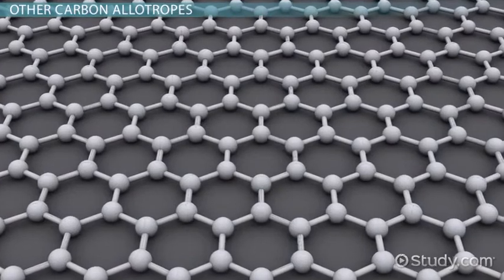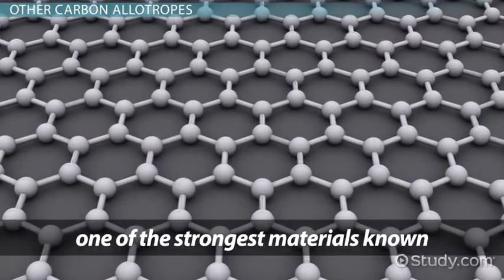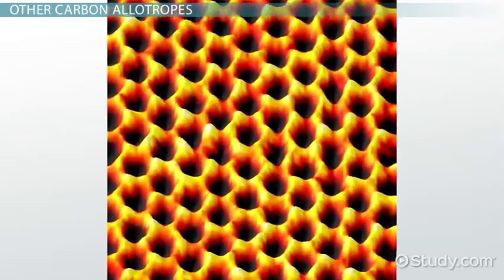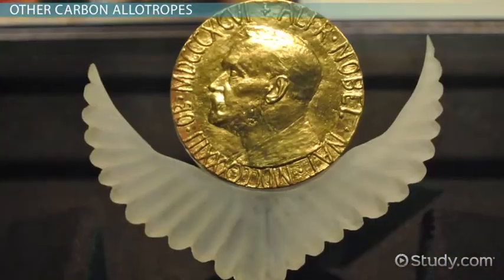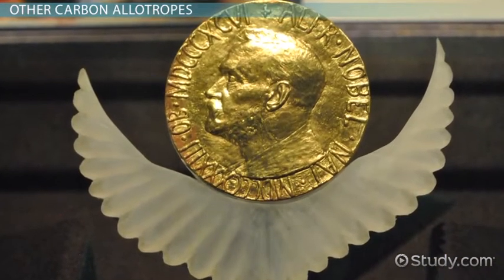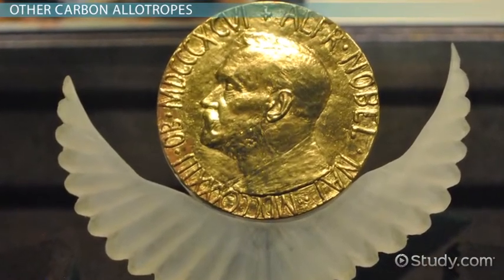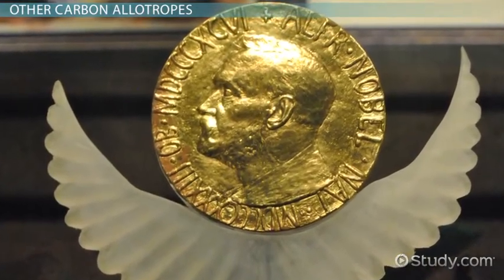Whereas graphite is very soft, graphene is one of the strongest materials known. It is very flexible, lightweight, and is a great conductor. Its discovery in the 1980s led to a Nobel Prize for the researchers, and it continues to be a focus of scientific and experimental study today.